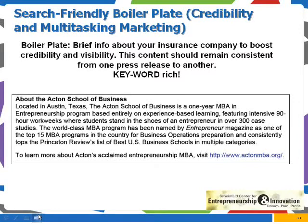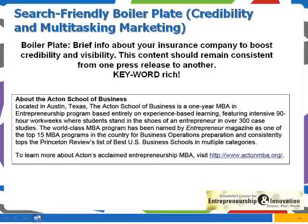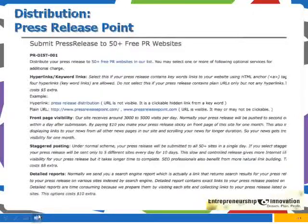The more you have the keywords and phrases in there, the more you can attract that. This is the one for Acton School of Business, located in Austin, Texas. The Acton School of Business is a one-year MBA — a key phrase for them. Their entrepreneurial school and Austin, Texas are all key phrases. They even mention how they've been named by Entrepreneur Magazine as one of the top 15 MBA programs. All of this is keyword-rich and helps their credibility, visibility, and sellability.